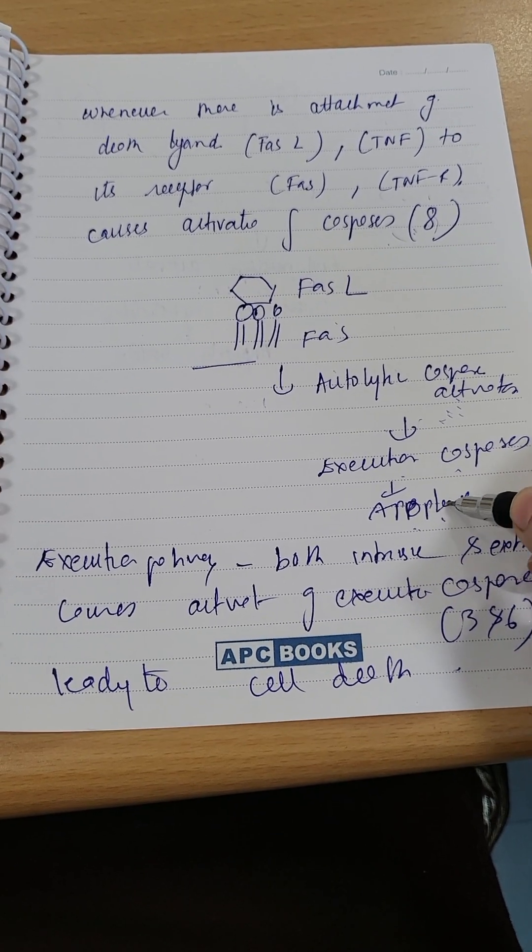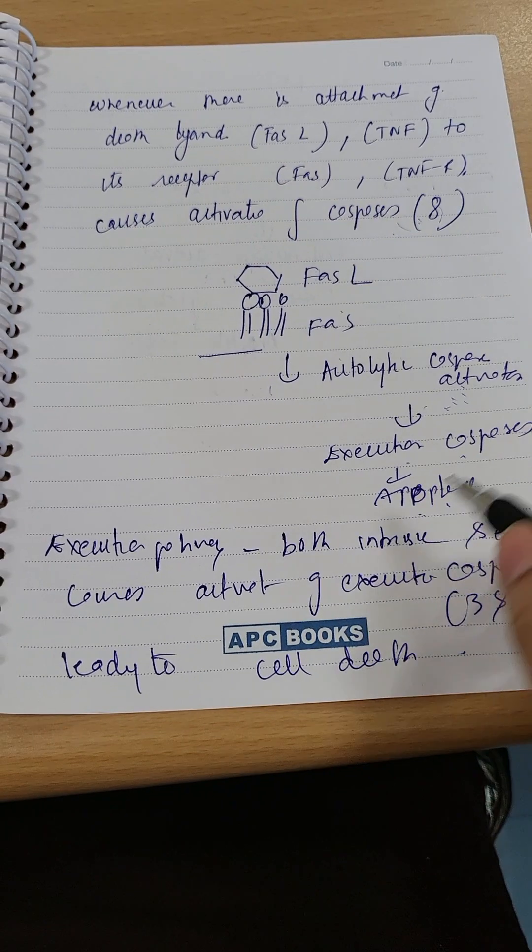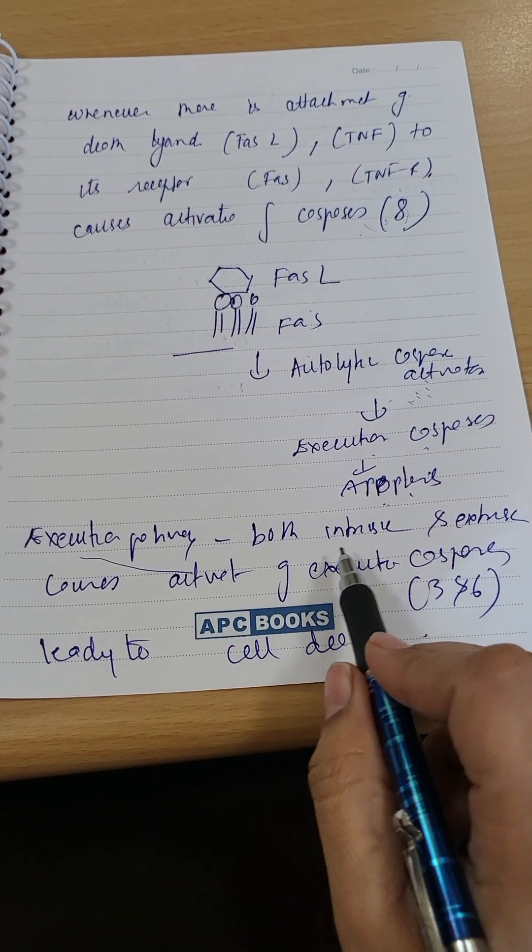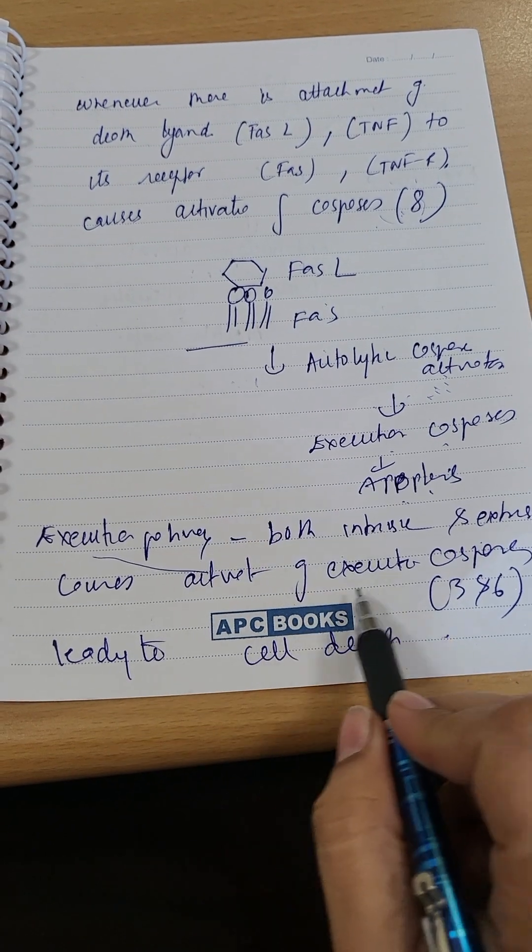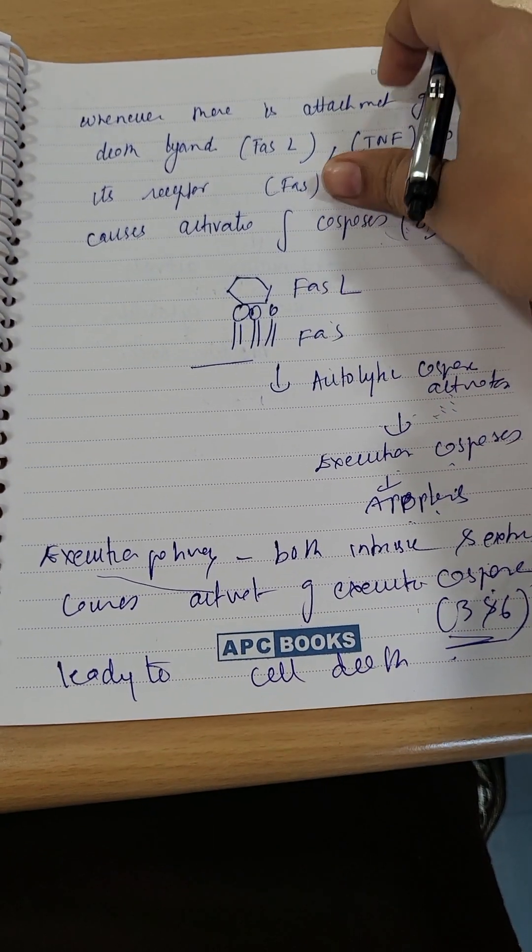So now, intrinsic activates caspase 9, extrinsic caspase 8. Both intrinsic and extrinsic cause activation of executioner caspases 3 and 6.